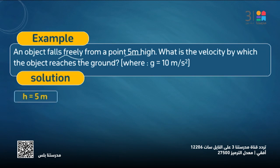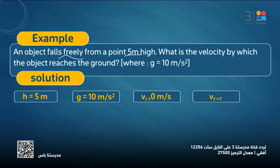Part by part, starting with the givens: H equals 5 meters, then G equals 10 meters per second squared, V initial equals zero meters per second. Good. Then V F is unknown. V F means the velocity when it reaches the ground.